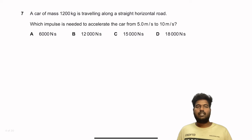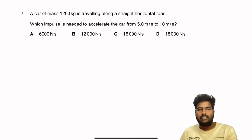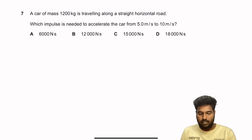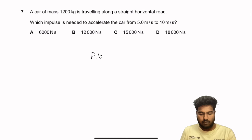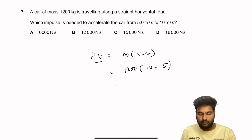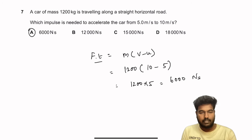Question 7: A car of mass 1200 kg travels along a straight horizontal road. What impulse is needed to accelerate it from 5 to 10 m/s? Impulse = mass × change in velocity = 1200 × (10 − 5) = 1200 × 5 = 6000 N·s. So A is the right answer.